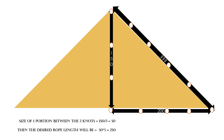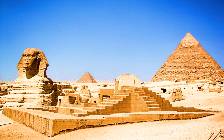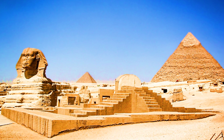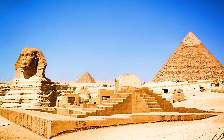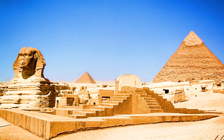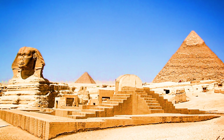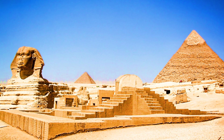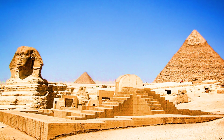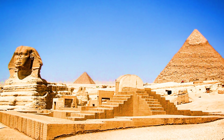Let's assume they wanted to build a pyramid 150 meters high and 400 meters wide. Then the length of the rope would be 250, as given by the Pythagorean equation. There is no doubt that Egyptians were well aware of these Pythagorean triplets, but they did not use that name and there is no written evidence. There is a strong probability that they had knowledge of it.